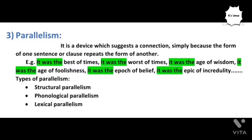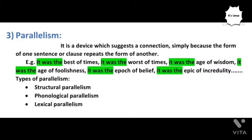An example of parallelism is an excerpt from the novel A Tale of Two Cities: 'It was the best of times, it was the worst of times, it was the age of wisdom, it was the age of foolishness, it was the epoch of belief, it was the epoch of incredulity, it was the season of light, it was the season of darkness, it was the spring of hope, it was the winter of despair.' The form 'it was the' is repeated again and again — this is parallelism.